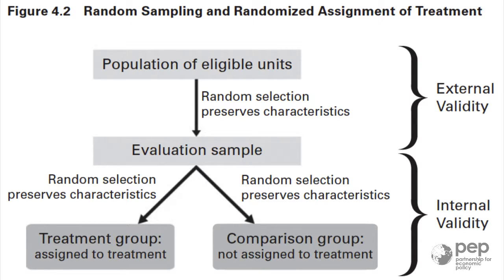Most of the work in a randomized evaluation is done before the intervention, in the randomization process. This assumes that you do what the assignment says, meaning treatment actually receives the program and control does not. There is no crossover, imperfect compliance, contamination, or unattended spillover.